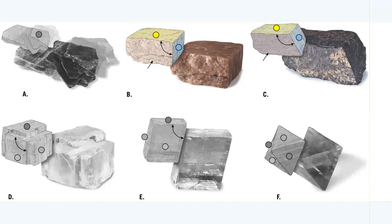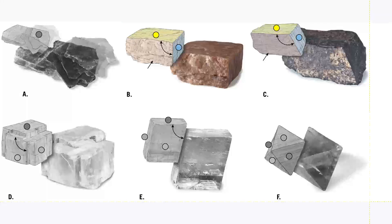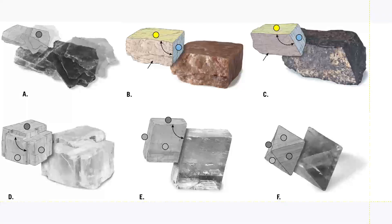Now let's talk two cleavage planes. Minerals with two cleavage planes form irregular, sort of rectangular shapes. These cleavage planes can be either 90 degrees to each other or not at 90 degrees. The 90-degree rectangles tend to be a little bit more boxy, and the not-90-degree rectangles are a bit more slanty. Do you see those two cleavage planes? There's one in yellow and one in blue. Remember, these are 3D objects, so that yellow plane is both the top and bottom of that mineral sample, and the blue one is both the left and right sides.